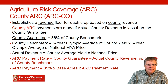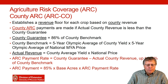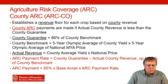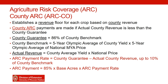The county guarantee is 86% of the county benchmark. The county benchmark is the five-year Olympic average of the county yield times the five-year Olympic average of the national marketing year average price — that same price that PLC uses. Then your actual revenue will be the county average yield in that year times that national price. For ARC, the payment rate is the county guarantee minus that county actual revenue.